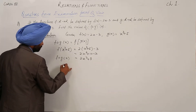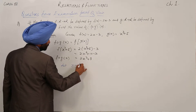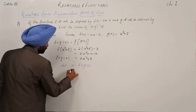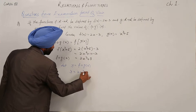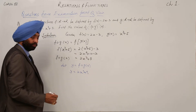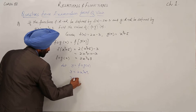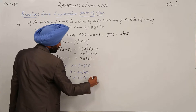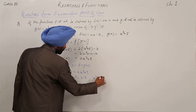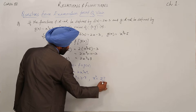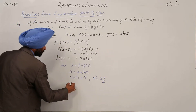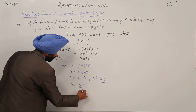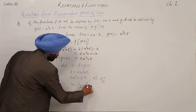Now we have to find the inverse. Let y = fog(x), so y = 2x cube plus 7. Then 2x cube = y minus 7, so x cube = (y minus 7) upon 2, and x = ((y minus 7) upon 2) raised to the power 1 by 3.